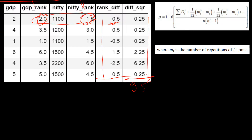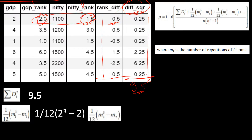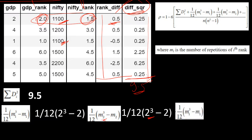Now let's look at the formula and plug in values for each element. The summation of di-squared corresponds to our squared differences column — the sum of that column is 9.5. The next element is one-twelfth times m1-cubed minus m1. From the previous slide, m1 equals 2, so we compute: one-twelfth times (2 cubed minus 2). Similarly for m2, the value is also 2 because 1100 was repeated twice.